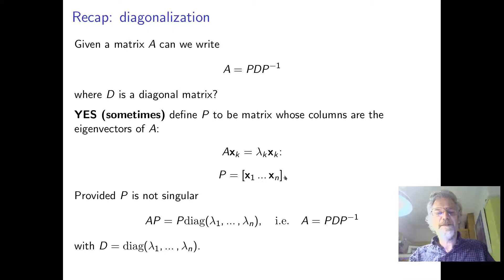So as long as we've got N independent eigenvectors then we make a matrix using those as the columns and then we could diagonalize it A equals PDP^(-1) or if you like AP equals PD, where D is the diagonal matrix of the eigenvalues, that's what it means, diagonal lambda_1 to lambda_N.